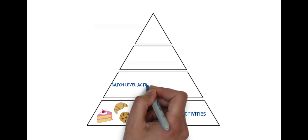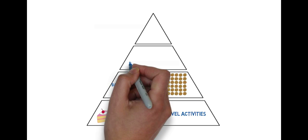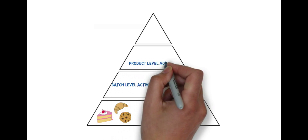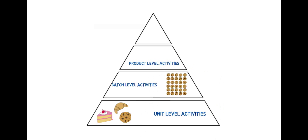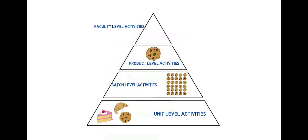Unit level activities are performed on each unit of product and vary by the number of units. Batch level activities are carried out on each batch of a product and vary by the number of batches produced. Product level activities relate to a specific product line. Facility level activities occur at the plant level and impact all the products manufactured by the factory.